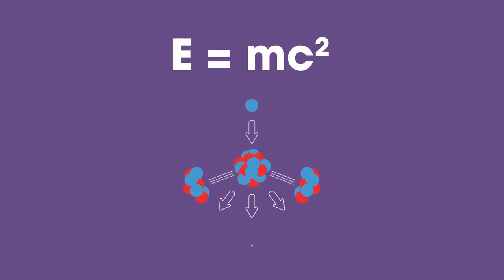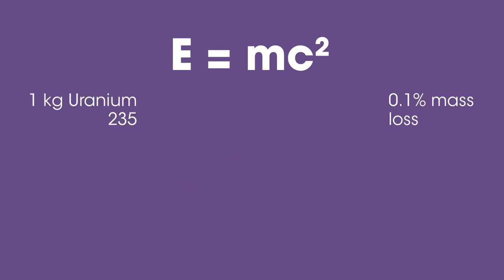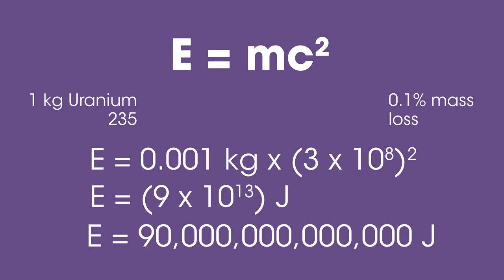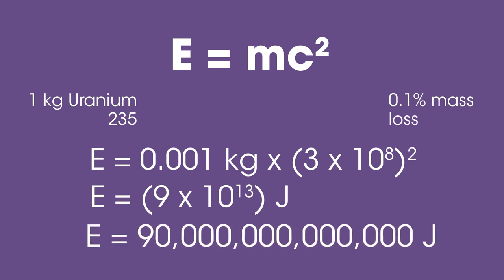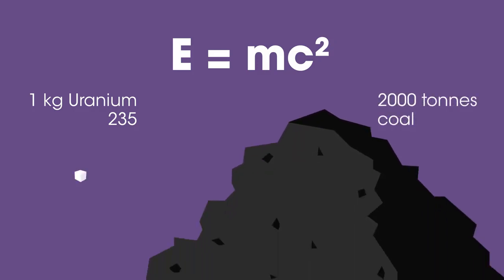On fission, about 0.1% mass loss is observed. So if 1 kilogram of uranium-235 underwent fission, the energy transfer would be E equals 0.001 kilograms times (3 times 10 to the power of 8) squared, which equals 9 times 10 to the power of 13 joules. To get this amount of energy from burning coal, you would need to burn 2,000 tons — that's a million times the mass of the uranium.